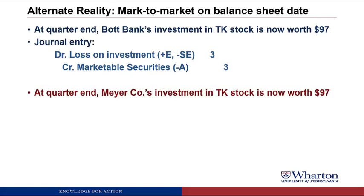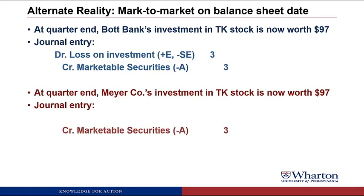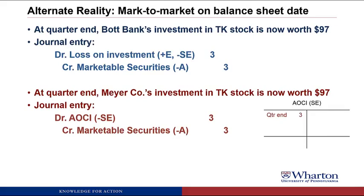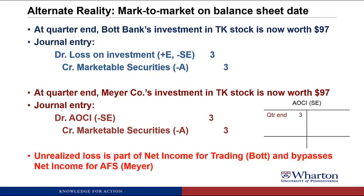Meyer has the same investment, also drops to 97. They also do the credit to marketable securities to mark the balance sheet to the market value, going from 100 down to 97. But remember, under AFS, their unrealized loss is going to go into AOCI. We bring up our AOCI account and that debit stores up the loss until we need it when we sell the security. Notice this is just like retained earnings where you could actually have a balance on the debit or credit side. AOCI and retained earnings could have balances on the credit side or the debit side, depending on whether it's accumulated other comprehensive income or, in this case, accumulated other comprehensive loss. Bottom line: this loss of three bypasses net income for available-for-sale from Meyer, whereas it's recognized in the income statement for BOT.